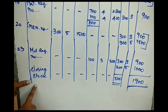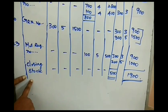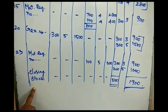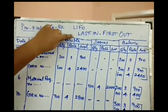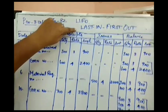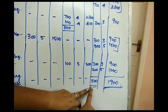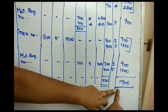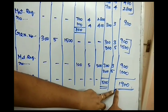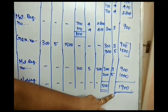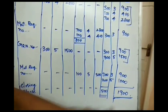Therefore, the closing stock as on January, valued by the Last In First Out method, consists of 500 units in total, with a total value of ₹1900.